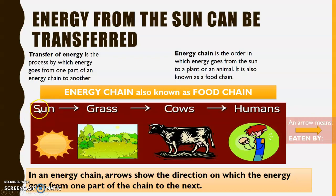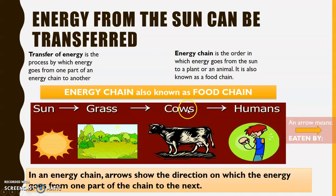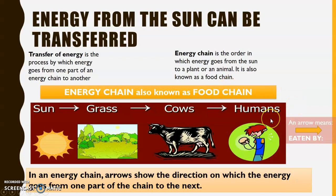Here is an energy chain, or food chain, showing energy from the sun going to the grass, the grass being eaten by the cows, and the cow — which is beef — being eaten by humans. In words: light energy from the sun goes to the grass, the grass is eaten by the cows, and the cows give off beef which is eaten by human beings. As simple as that.